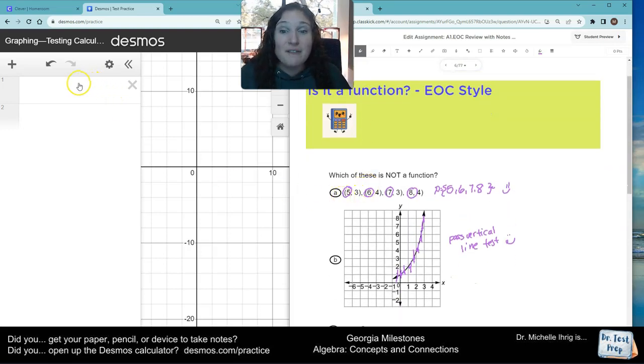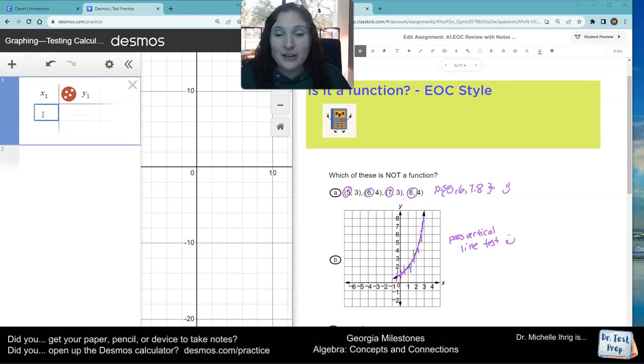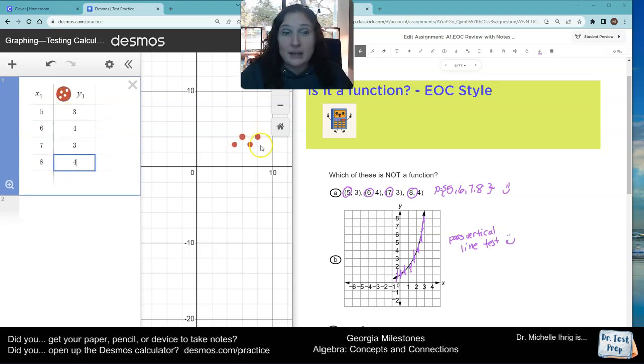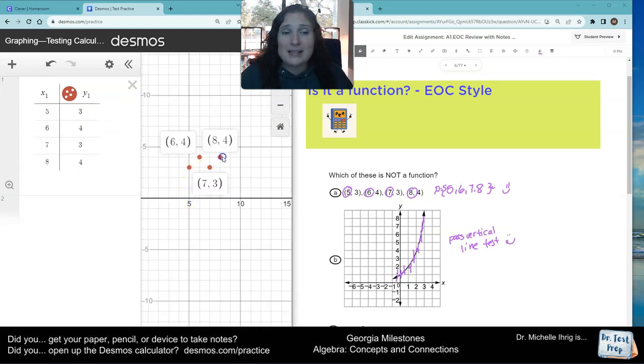Also for this first one, if you wanted to, like if you forgot—if you only remembered vertical line test and you didn't remember to check the x values—the other thing you could have done is type these numbers into here, and now we can tell that there's no line that has two red dots on it going up and down. So you could have checked it that way. That would have been totally fine.